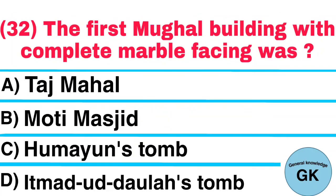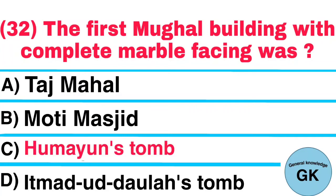Question number 32. The first Mughal building with complete marble facing was: A. Taj Mahal, B. Moti Masjid, C. Humayun's tomb, D. Itmad-ud-Daulah's tomb. Answer: Humayun's tomb.